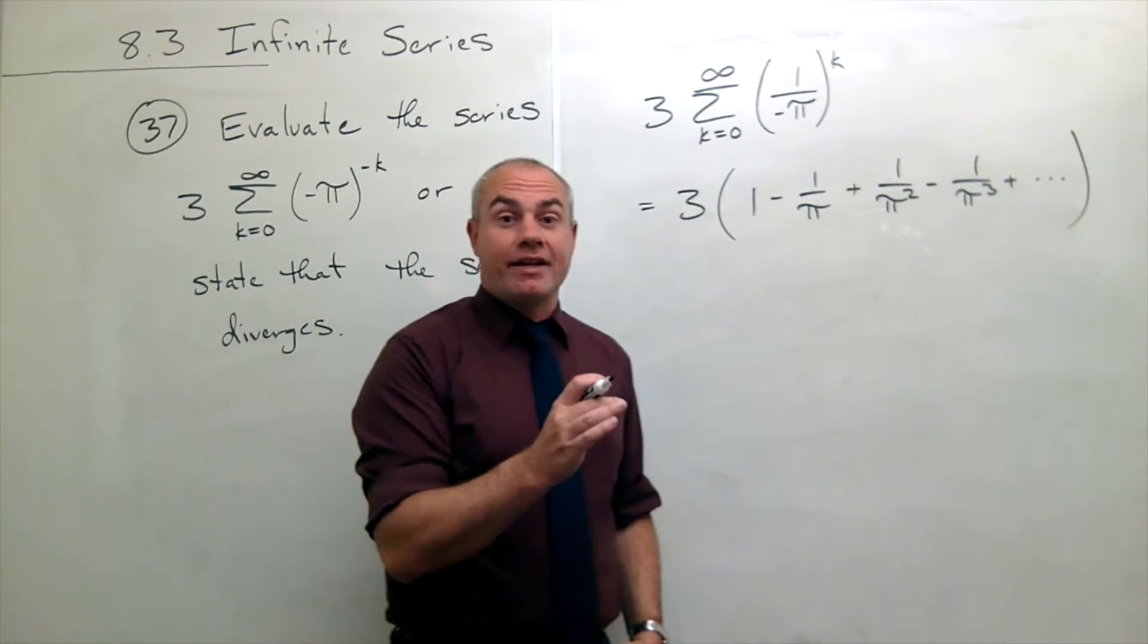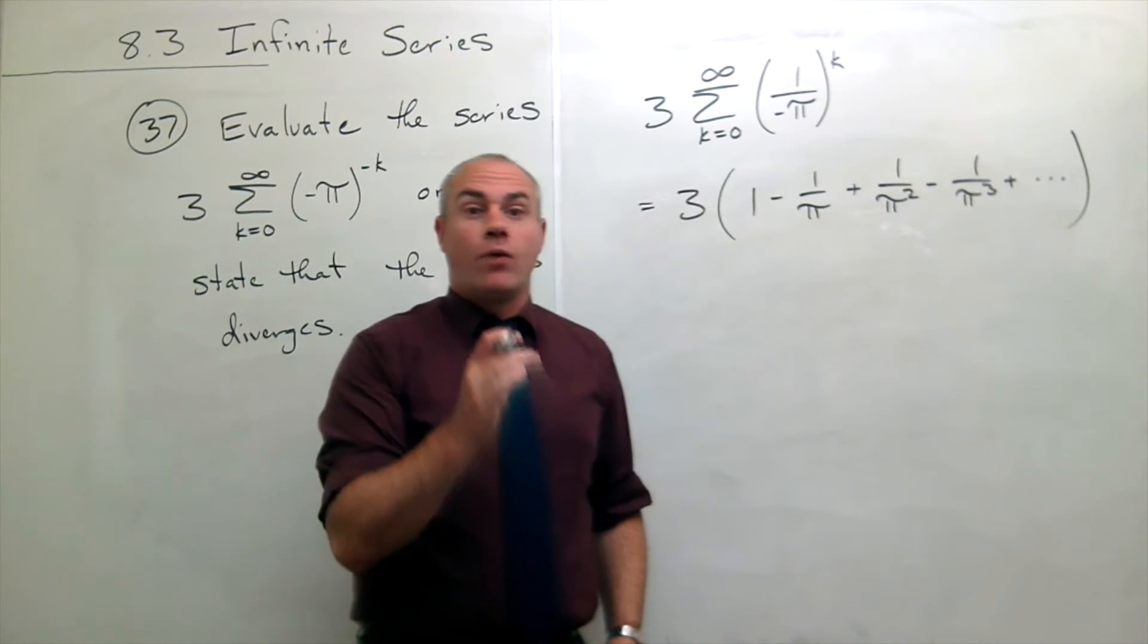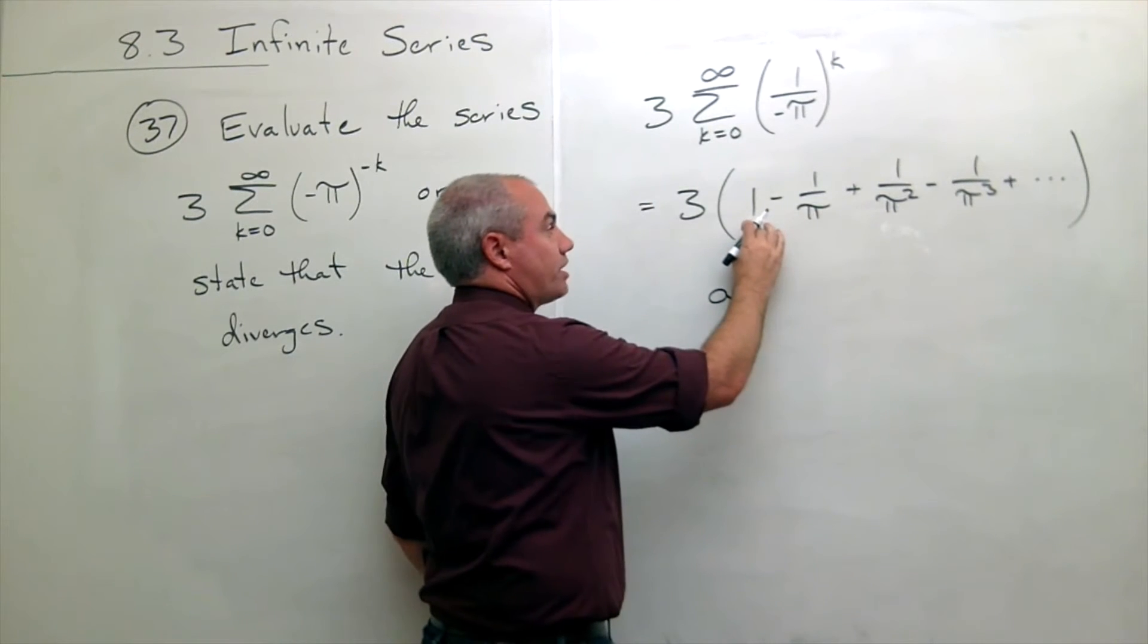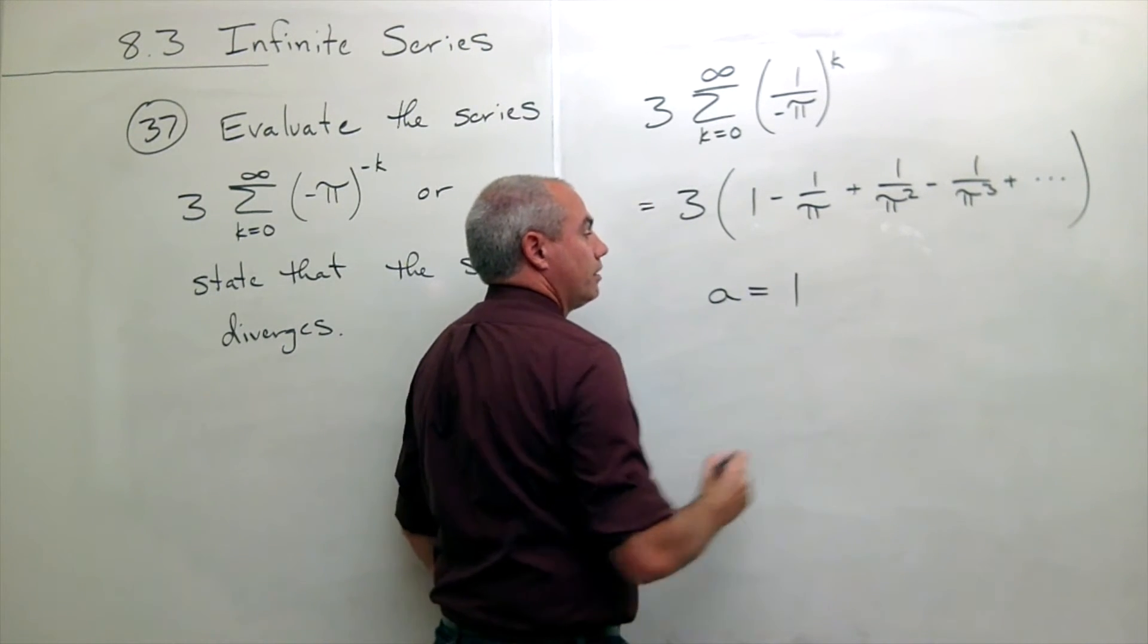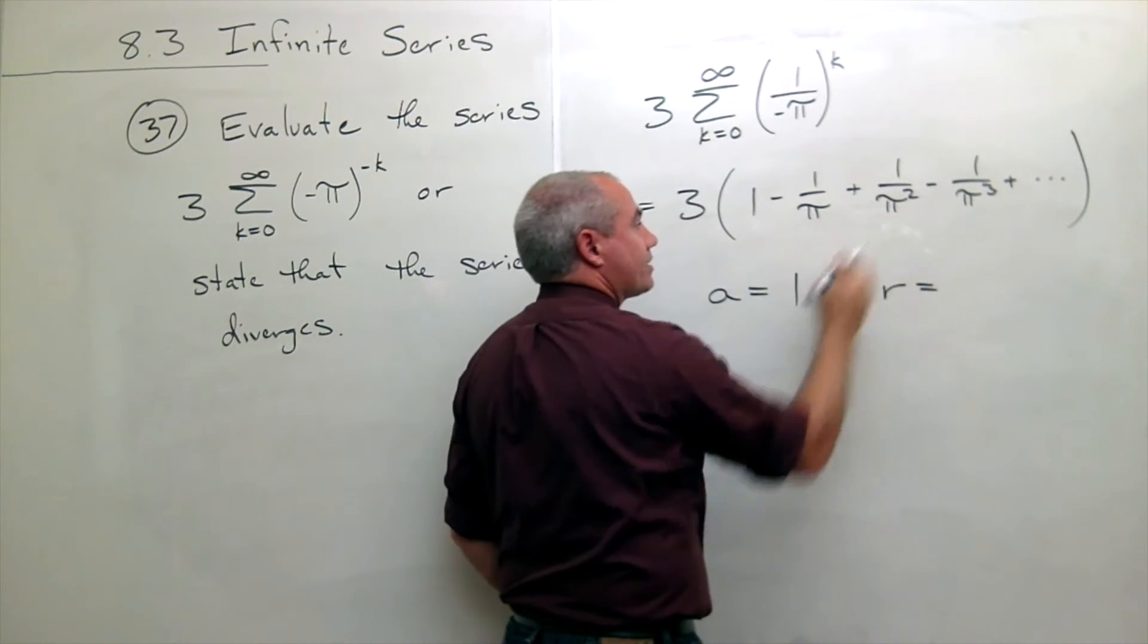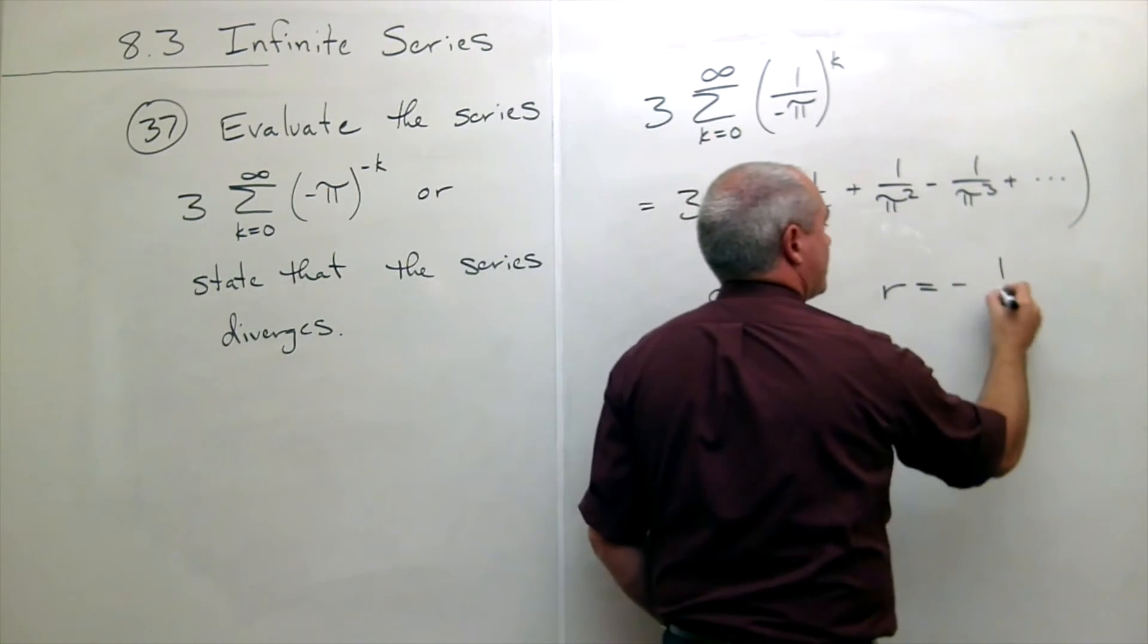So what is the a in this geometric series? What is the r? The a is the first term of the series which is 1. The r is what I multiply by every time to get to the next term of the series, which is minus 1 over π.